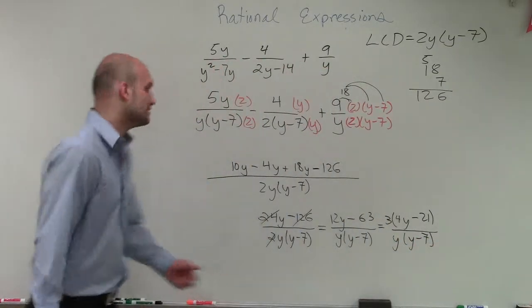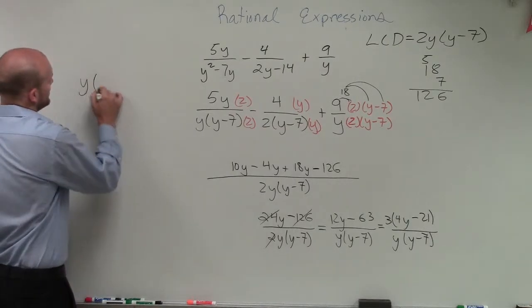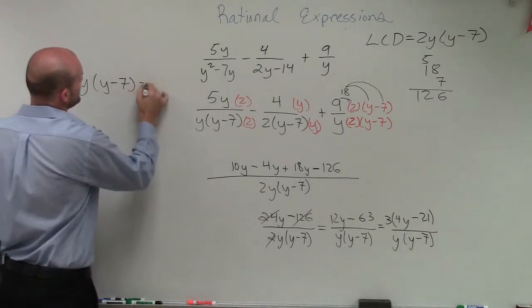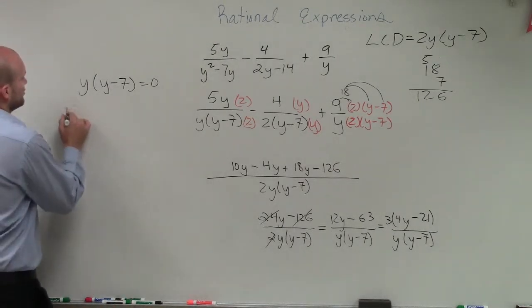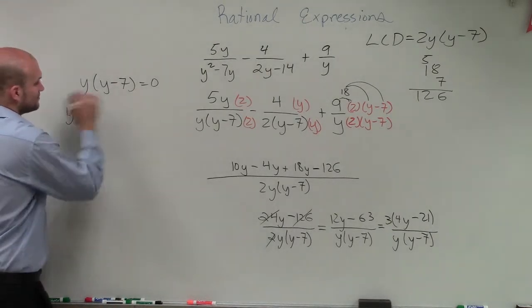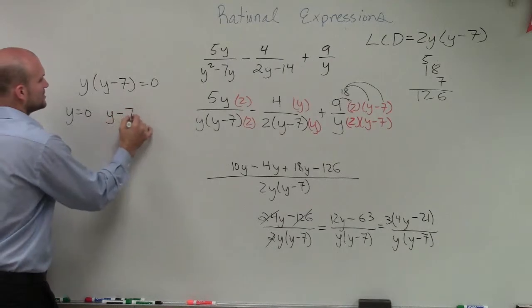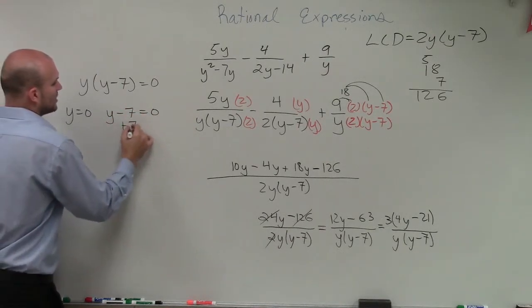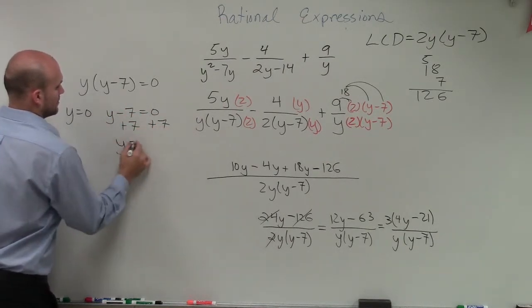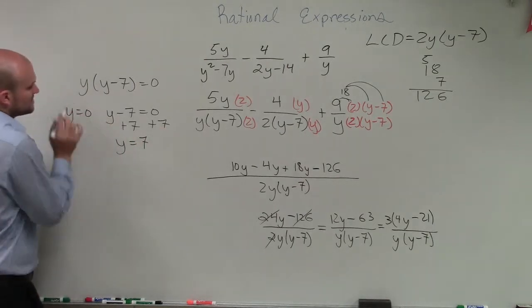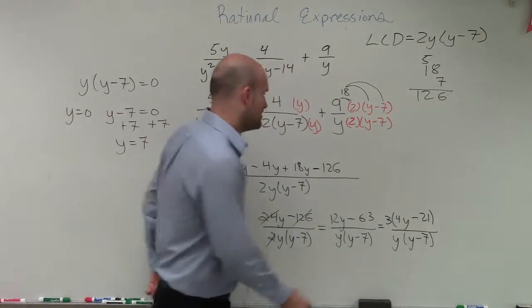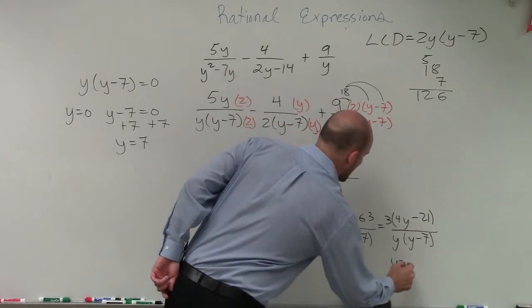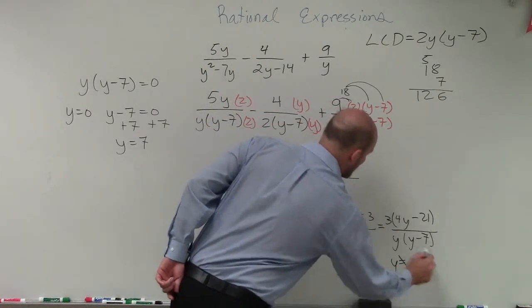Now, if we wanted to find the restriction, remember, we can just take our denominator and set it equal to 0. Well, since we have a product that's equal to 0, we can apply our 0 product property. So we set each factor equal to 0, and then we solve for our variable. So therefore, when y equals 0 or y equals 7, our denominator equals 0. So therefore, our restrictions are going to be y cannot equal 0 or positive 7.